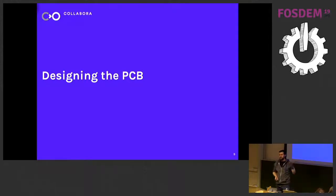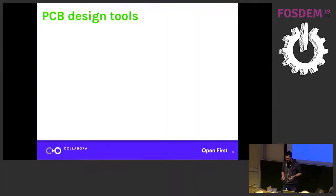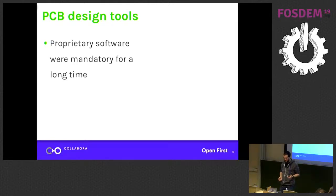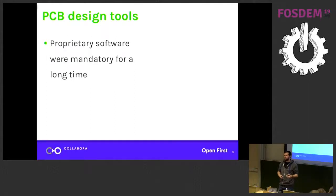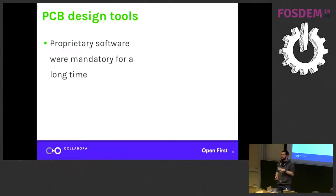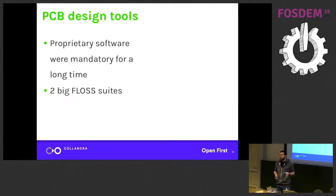Once your hardware design is validated, you can finally design the PCB itself. For a long time, you were only able to use proprietary software for real-world projects. There was open source software, but in my opinion — talking about the mid-2000s — you mostly couldn't use it to build a project from the ground up and get to manufacturing. Right now we have, in my opinion, two big free and open-source software suites: KiCAD and Fritzing.